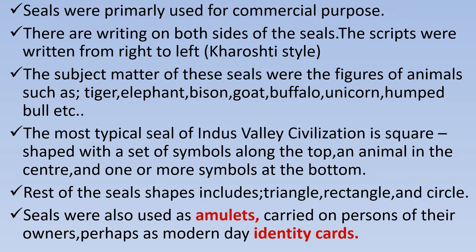The subject matter of these seals were figures of animals such as tiger, elephant, bison, goat, buffalo, unicorn, humped bull, etc. The most typical seal of Indus Valley Civilization is square-shaped with a set of symbols along the top, an animal in the center and one or more symbols at the bottom. Other seal shapes include triangle, rectangle and circle. Seals were also used as amulets, carried on the persons of their owners, perhaps as a modern-day identity card.